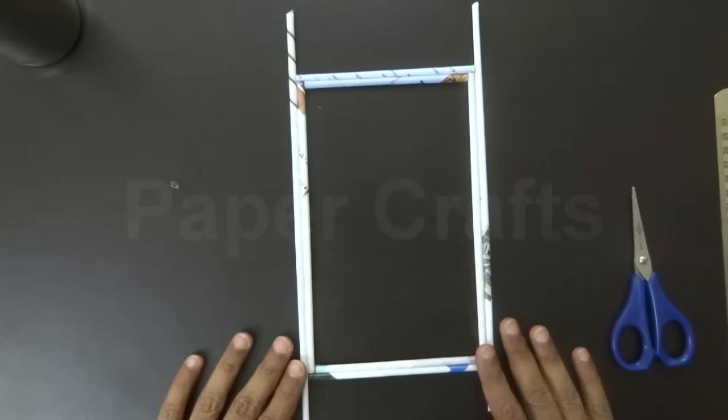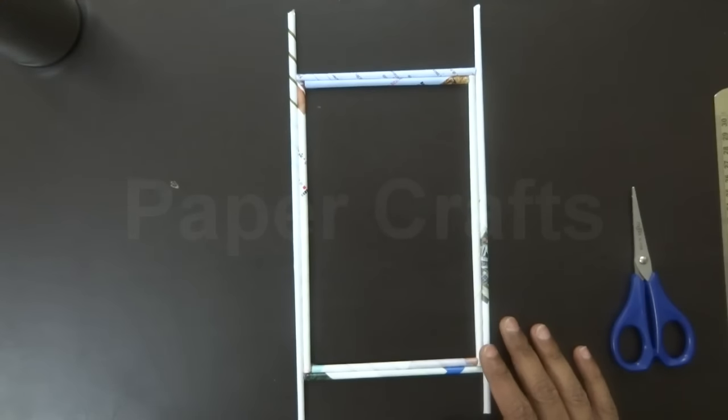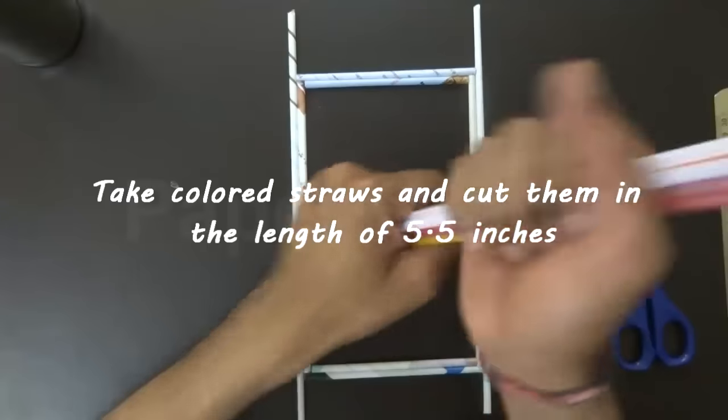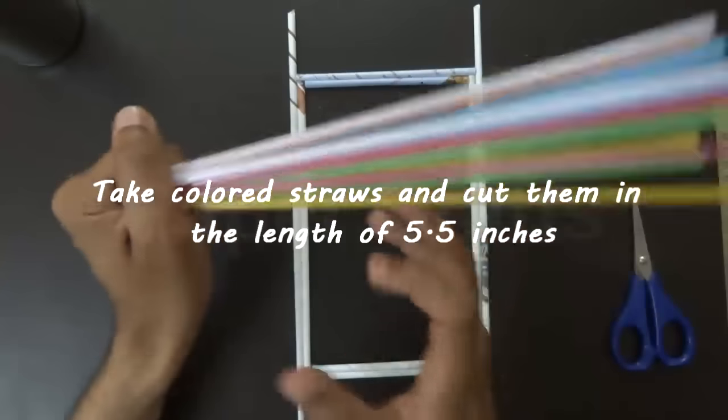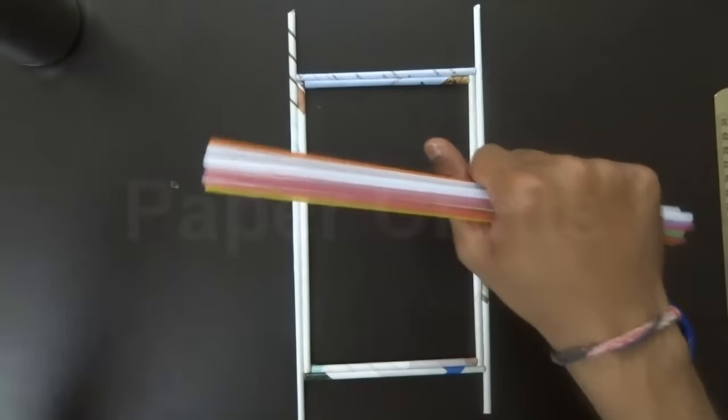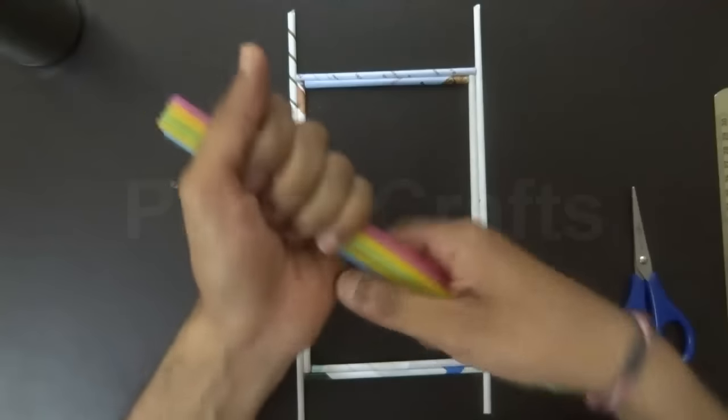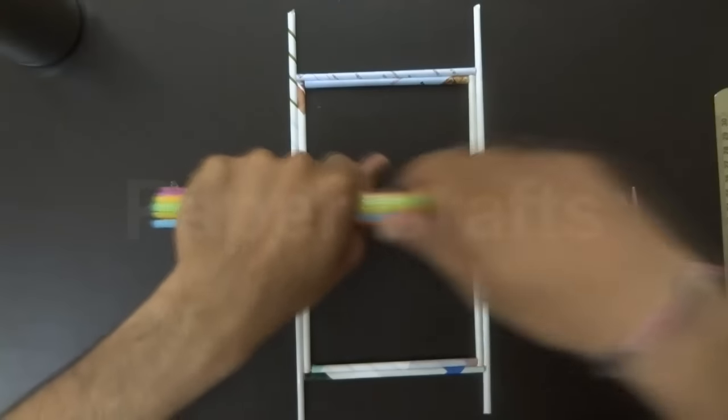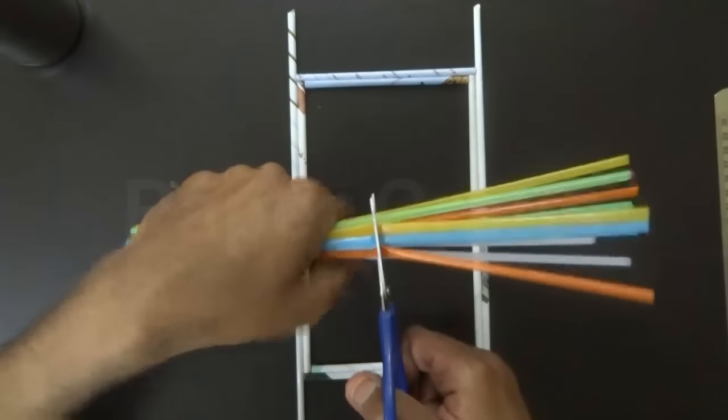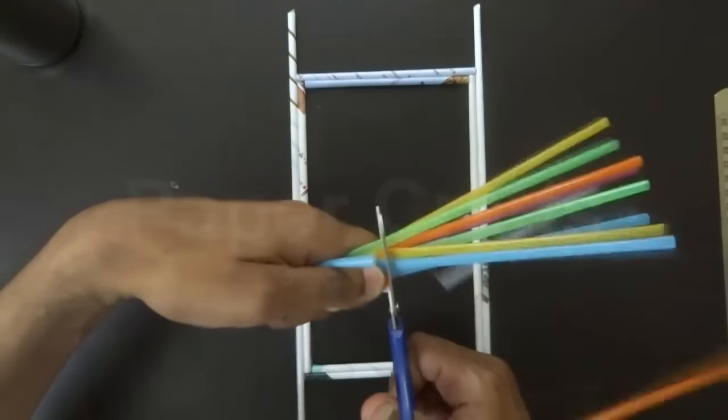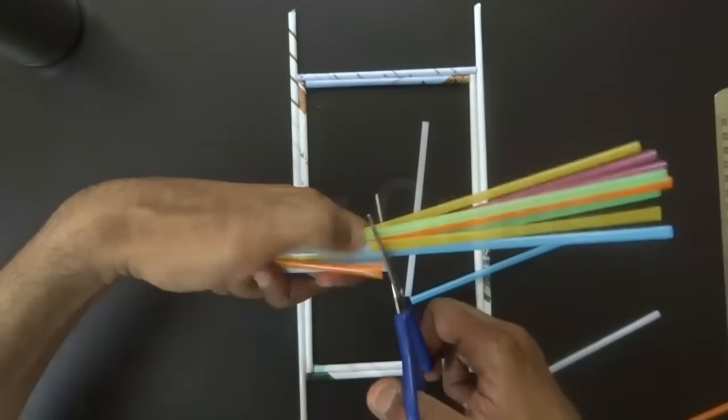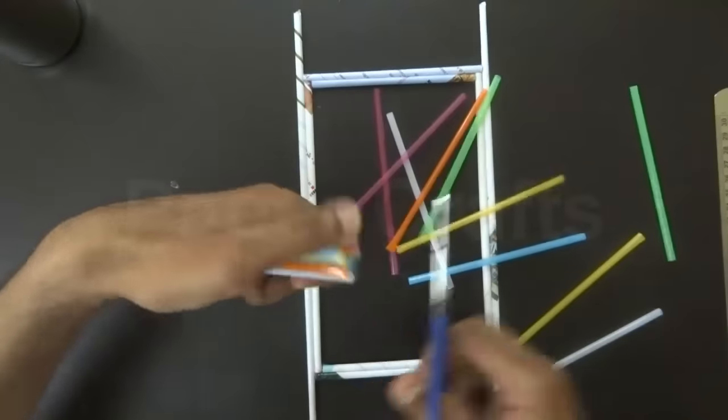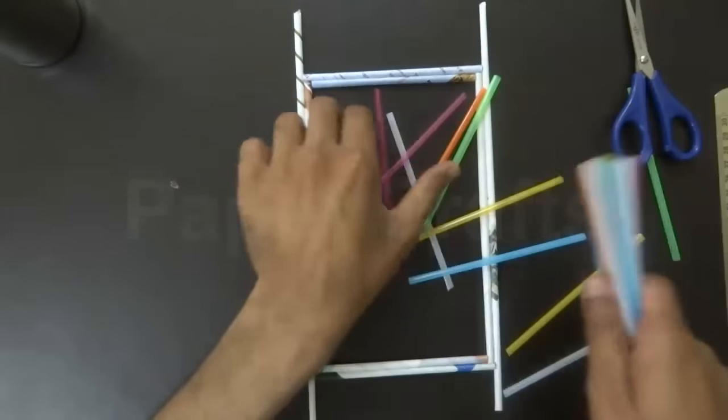Once we have made this shape we need colored straws and we need to cut these colored straws into length of 5 inches. Use scissors to cut the straws in length of 5 inches.